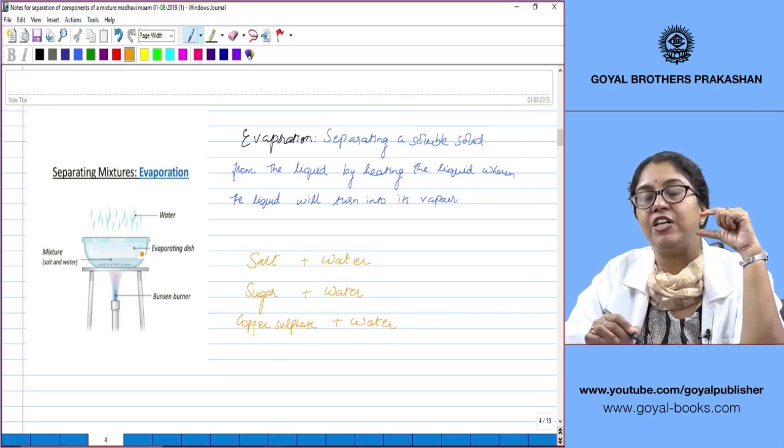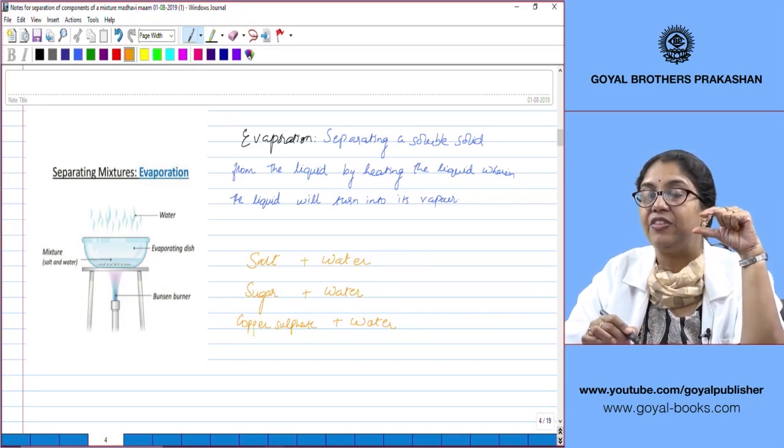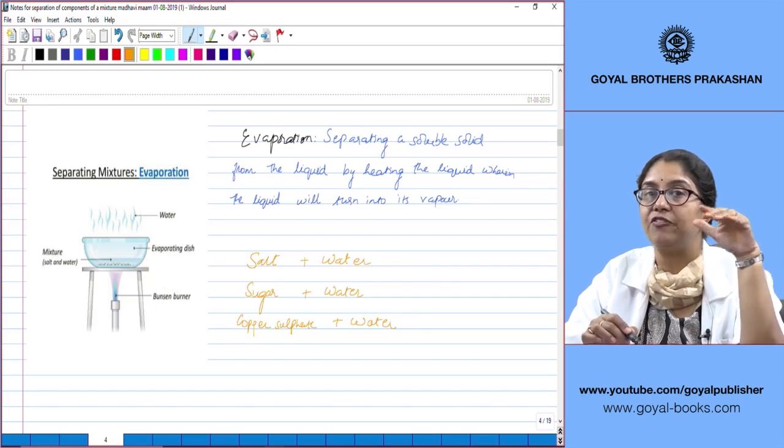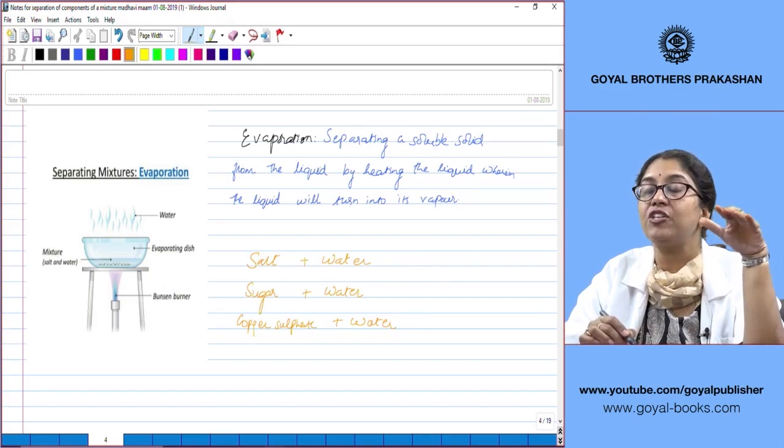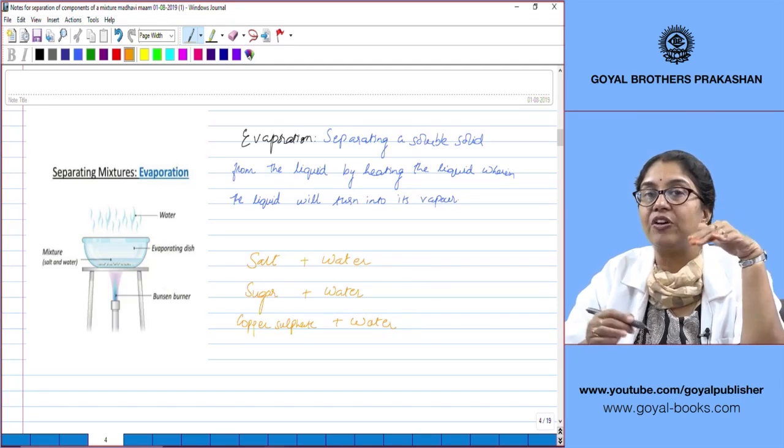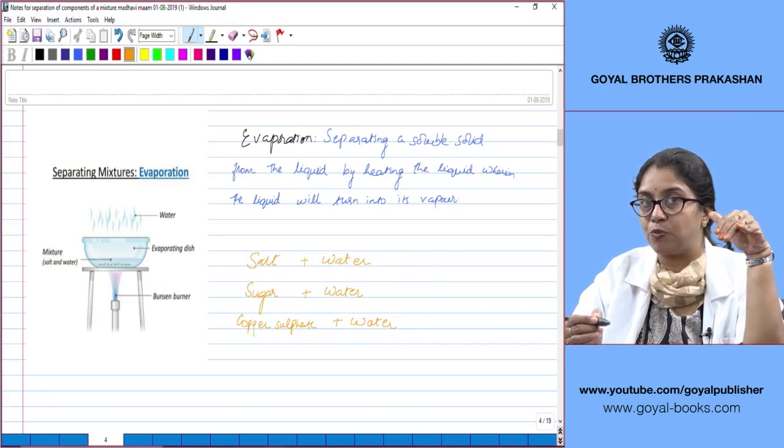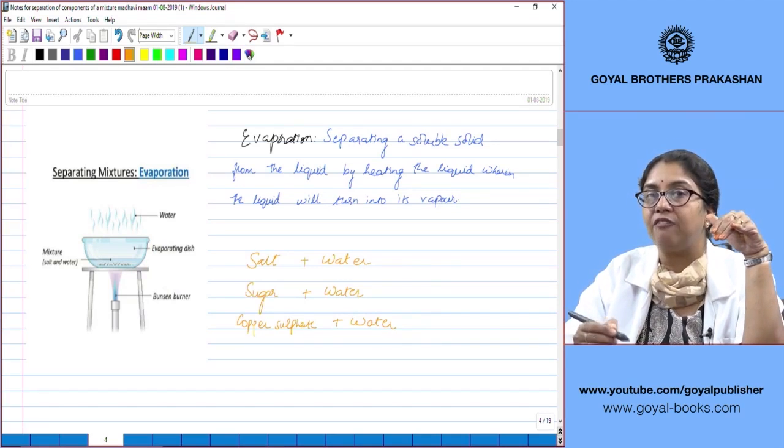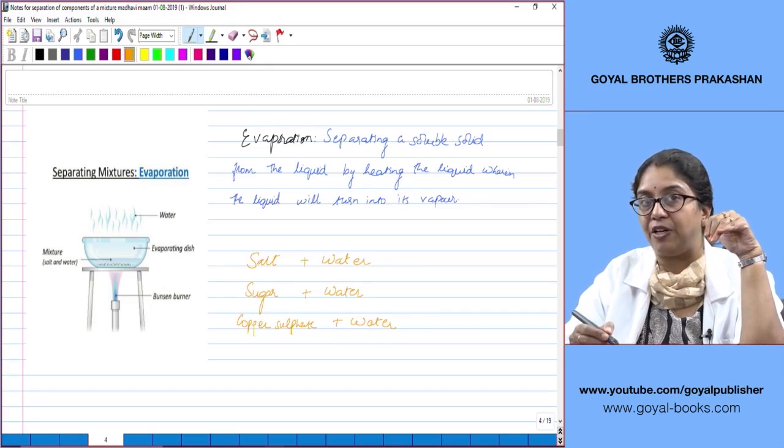Why are we taking a dish which is shallow and not very deep? The reason for this is evaporation is basically a surface phenomenon, that is it takes place on the surface of the liquid. So, greater the exposure of the liquid, faster will be the rate of evaporation.